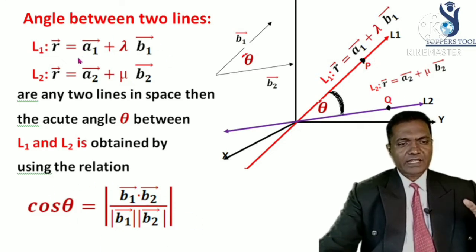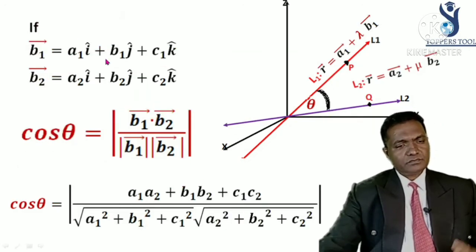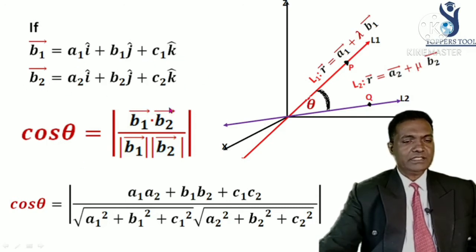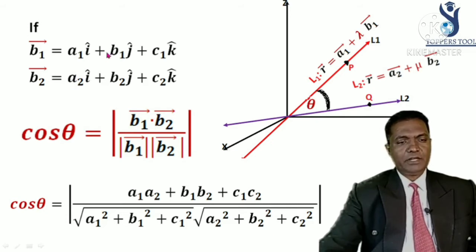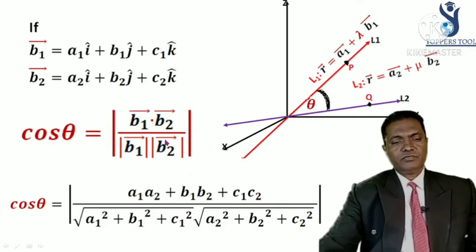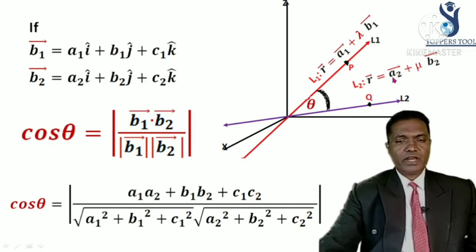Apply this formula to find the angle between two lines L1 and L2. If vector B1 is A1 î + B1 ĵ + C1 k̂ and vector B2 is A2 î + B2 ĵ + C2 k̂, then cos θ = (A1A2 + B1B2 + C1C2) divided by the product of their magnitudes, where |B1| = √(A1² + B1² + C1²) and |B2| = √(A2² + B2² + C2²). In this way you can find the angle between any two lines passing through the origin.